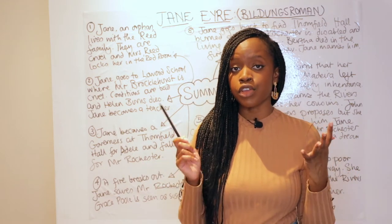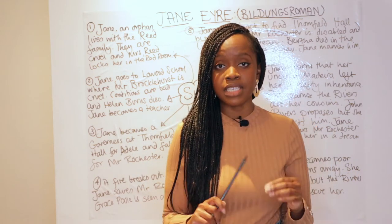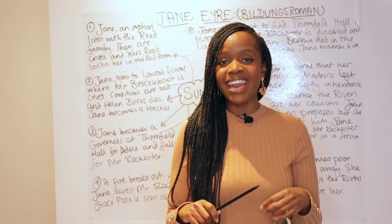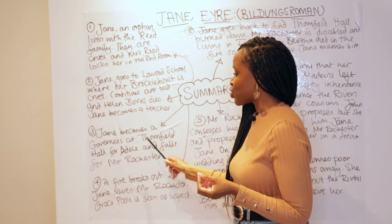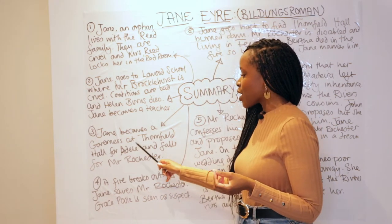After Helen Burns dies, Jane goes on to stay for eight years at Lowood school, first finishing her studies and then becoming a teacher. After spending a great amount of time at Lowood, she decides to move on and applies for a role as a governess for a young girl called Adele at Thornfield Hall.